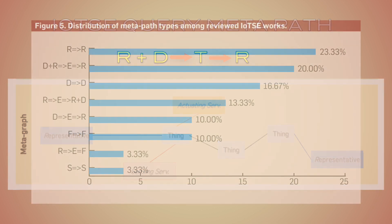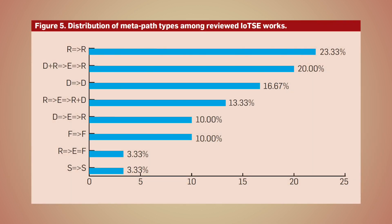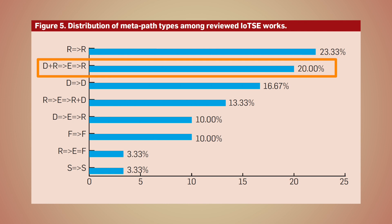This also happens to be the second most common class in the Internet of Things search engine literature. It provides a deeper, more fine-grained description of what a search engine can do, compared to the old model where labels like 'sensor search' or 'thing search' were kind of arbitrary.